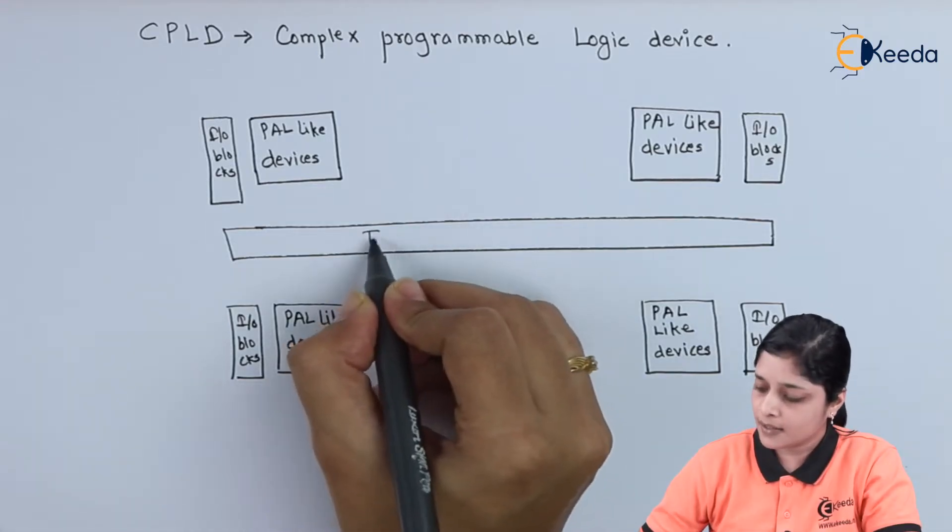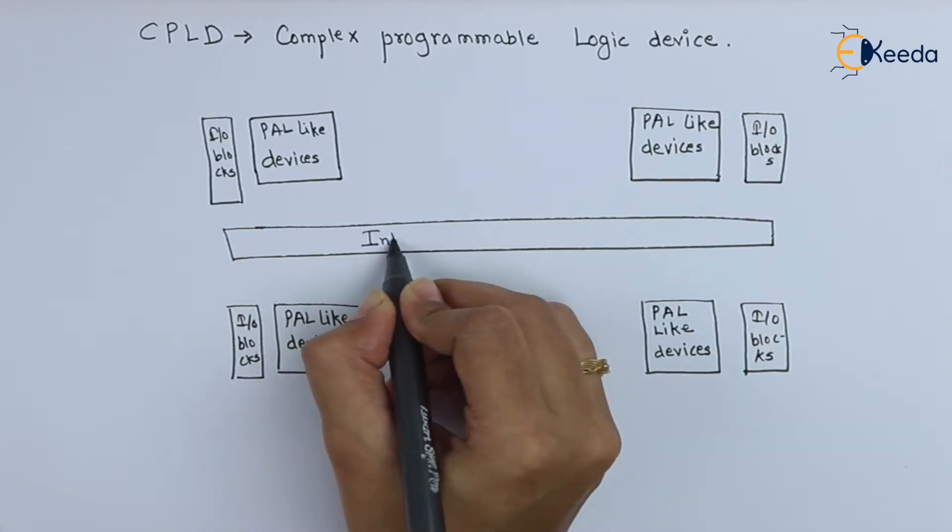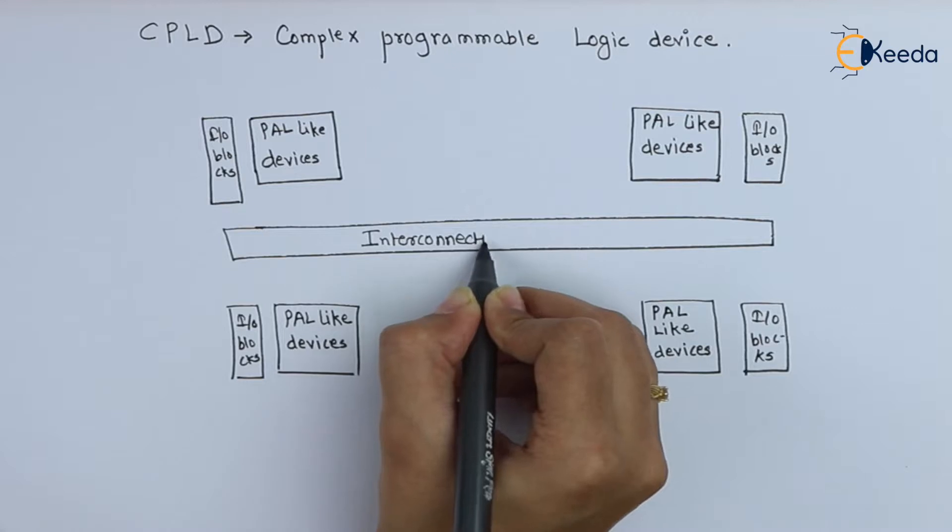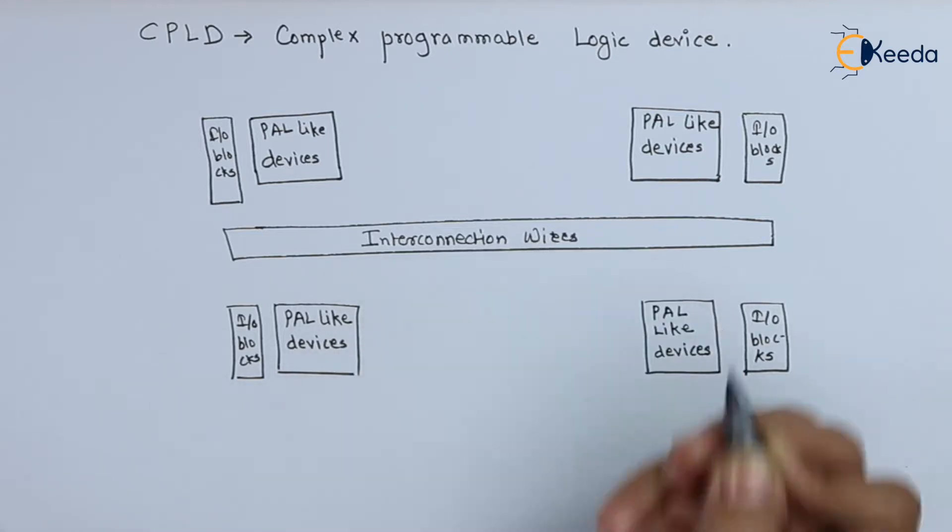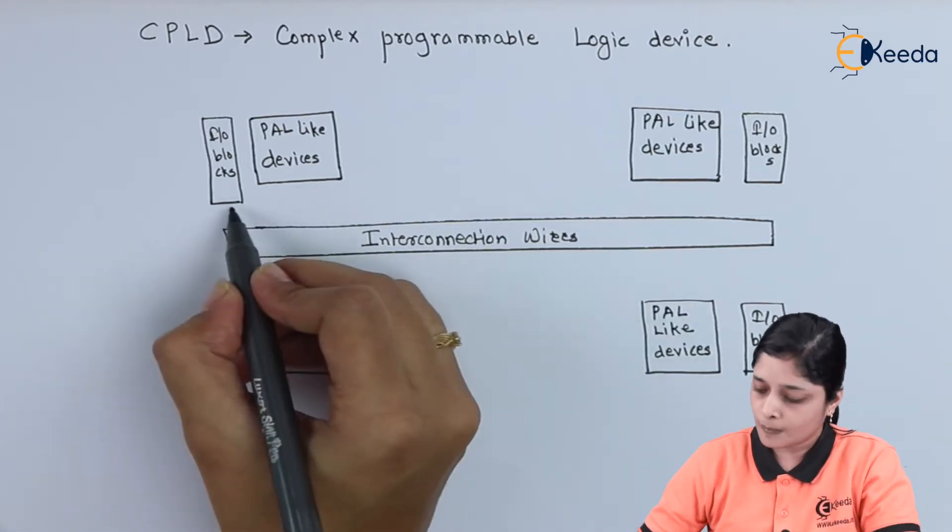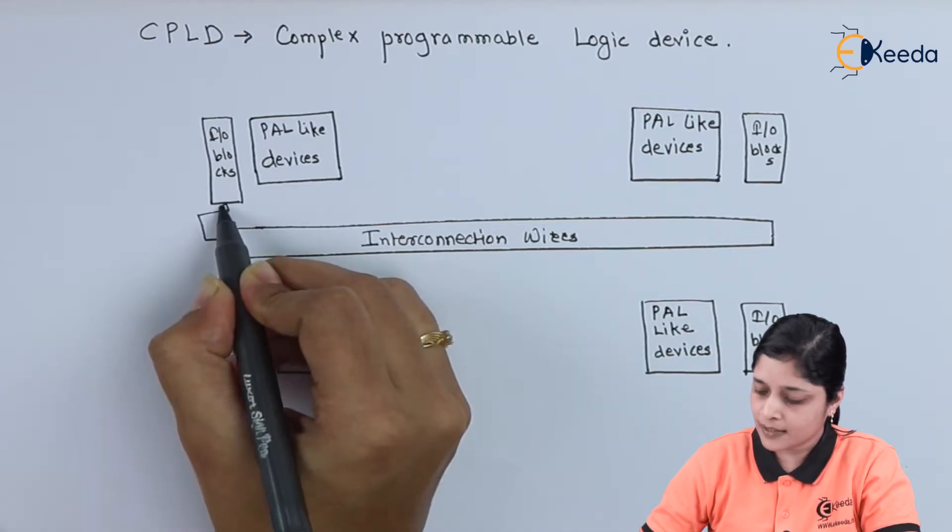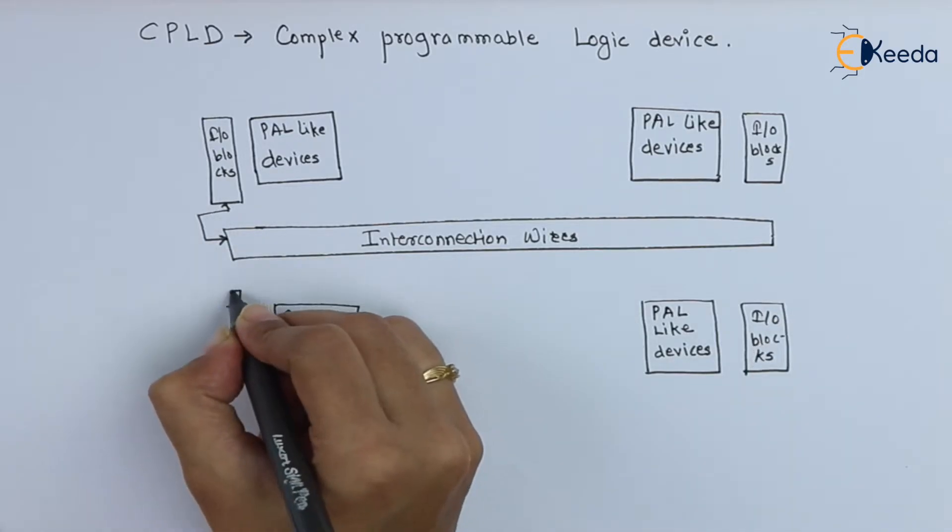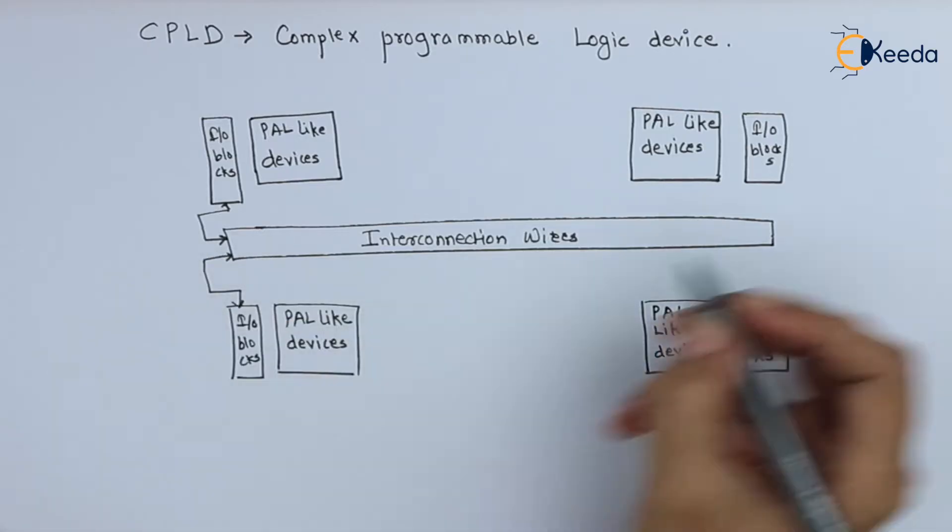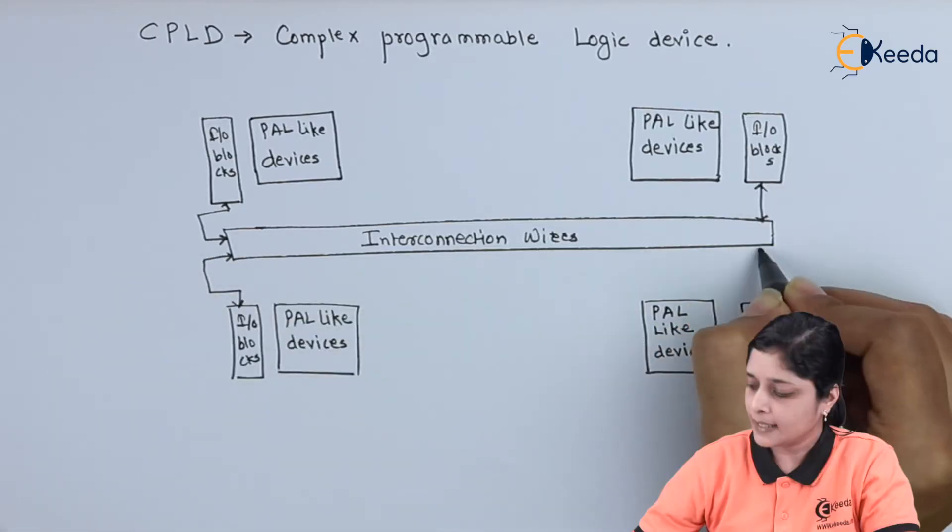And this is the interconnection wires. Now all these boxes are interconnected like this.